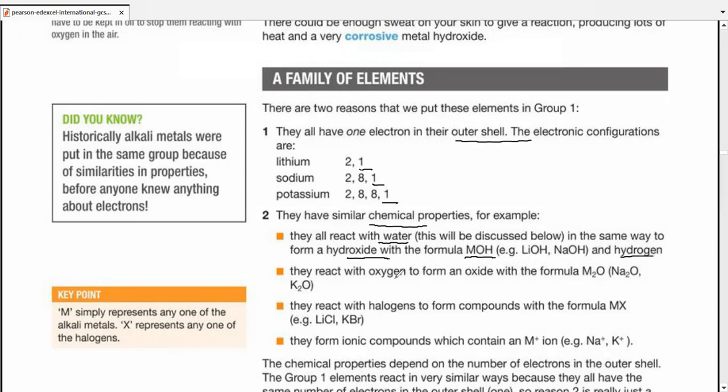We'll discuss this reaction in detail later. They react with oxygen to form oxides with the formula M2O, like Na2O or K2O. They also react with halogens to form compounds, and usually the formula is MX. For example, one atom of any one of these alkali metals and one atom of any one of the halogens. X means halogen, and M means the alkali metal. So lithium chloride or potassium bromide are good examples.